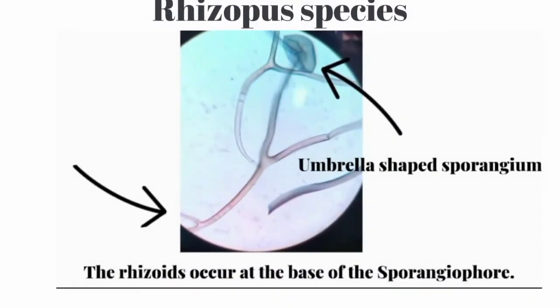Next one is Rhizopus. They have an umbrella-shaped sporangium. At the base of the sporangium, nodal rhizoids are present. Aseptate hyphae are also present.